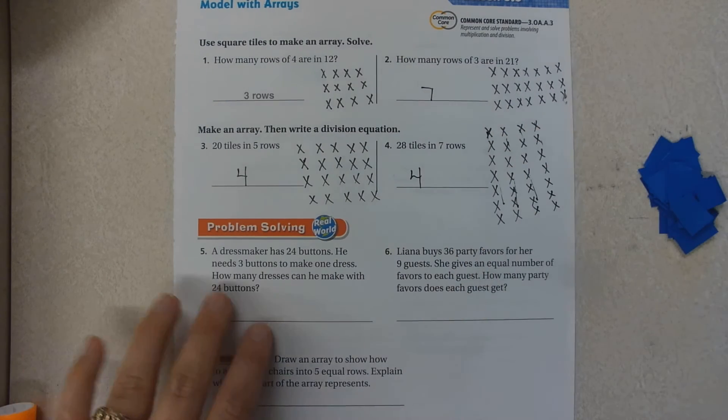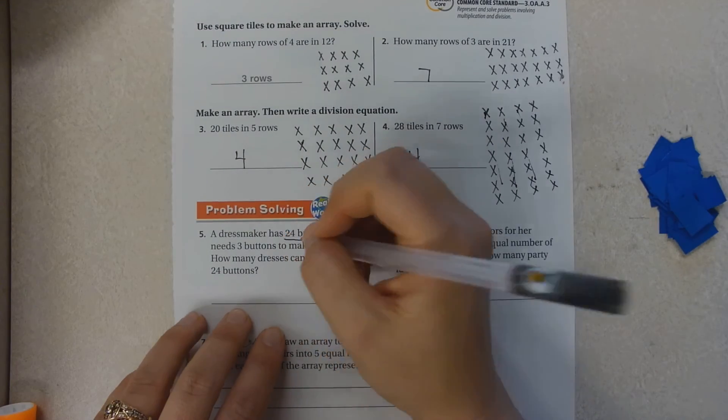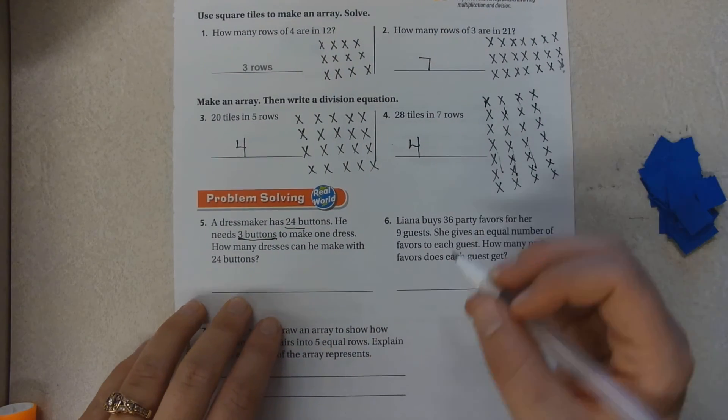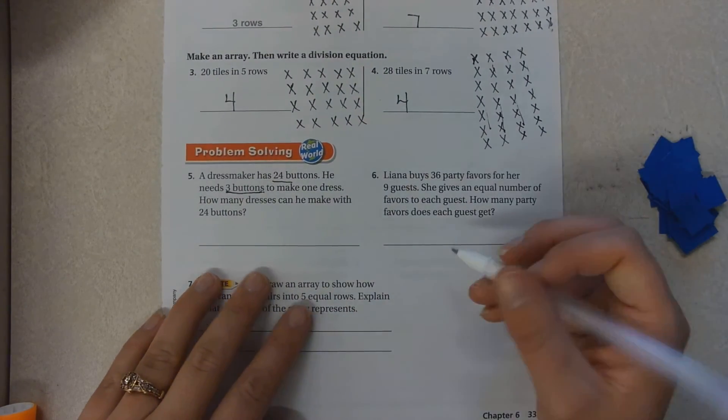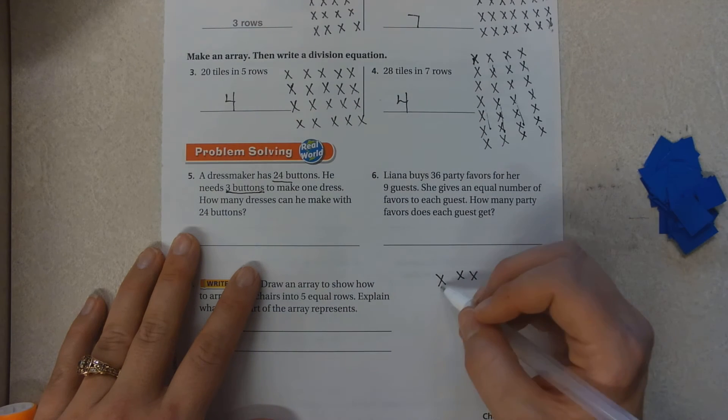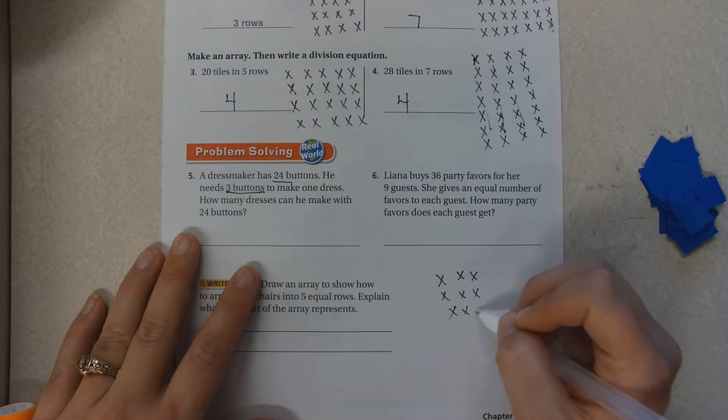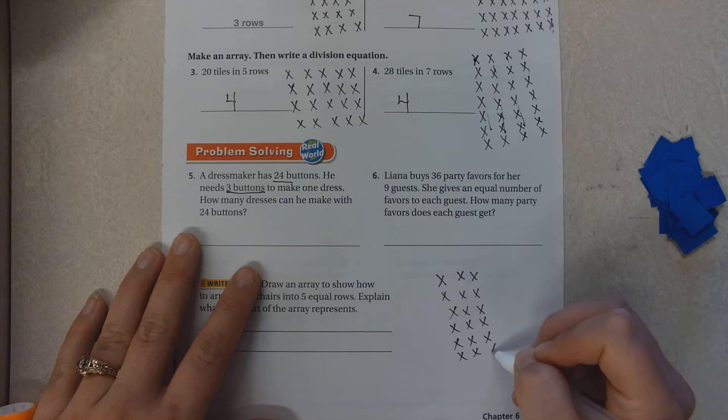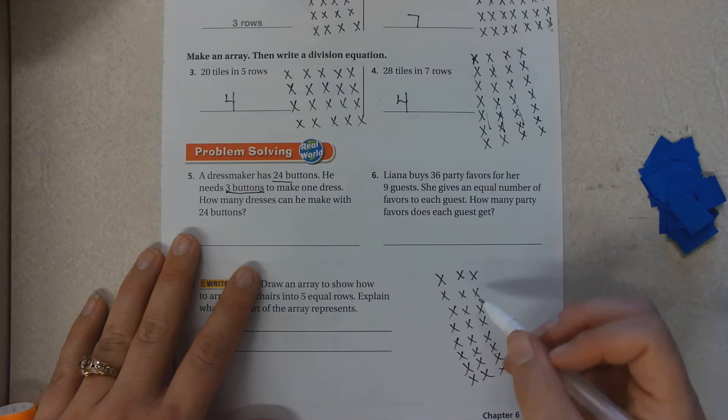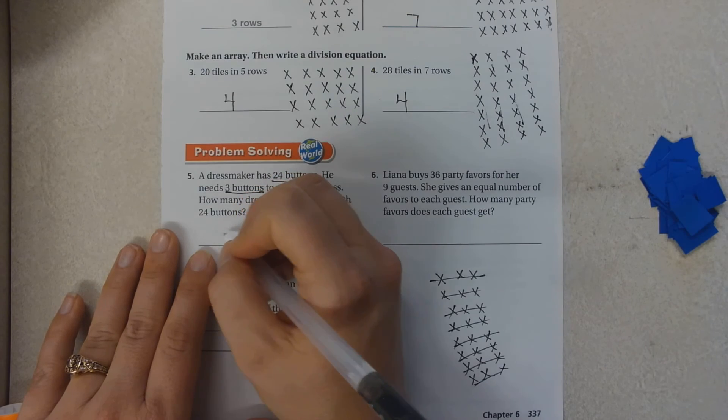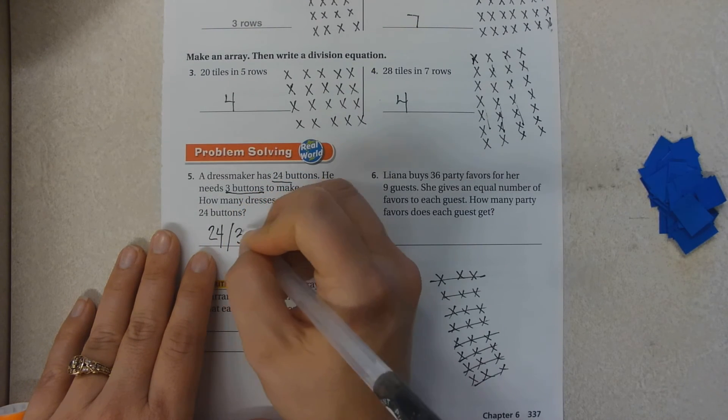A dressmaker has twenty-four buttons. He needs three buttons to make one dress. How many dresses can he make? I'm going to start with twenty-four groups of three. One, two, three, four, five, six, seven, eight, nine, ten, eleven, twelve, thirteen, fourteen, fifteen, sixteen, seventeen, eighteen, nineteen, twenty, twenty-one, twenty-two, twenty-three, twenty-four. So I have one, two, three, four, five, six, seven, eight groups. Twenty-four divided by three equals eight.